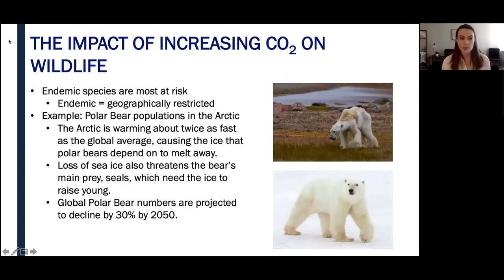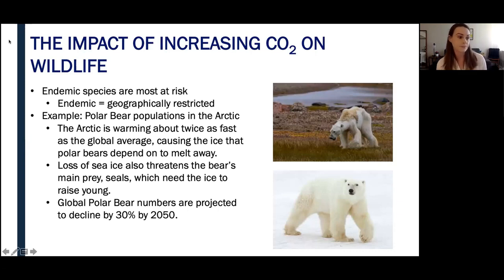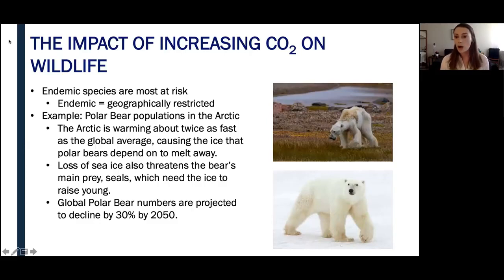One of the most prevalent examples of species population decline are polar bears. One reason why polar bears are so vulnerable to climate change is due to the fact that they are endemic, meaning that they inhabit a very specific geographical niche and are unable to move or migrate to another habitat. Polar bears range across the Arctic Ocean in parts of Canada, Alaska, Russia, Greenland, and Norway. They walk or swim very long distances to find food, and their primary food source are seals.